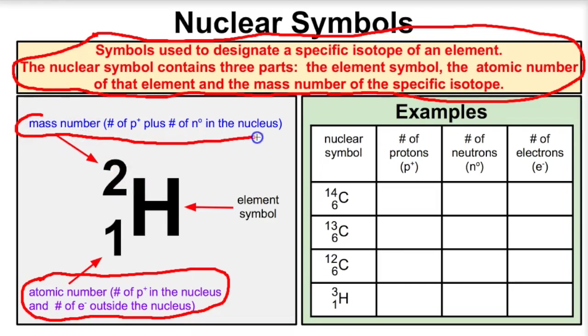And then in the top left-hand corner we're going to have the mass number. The mass number is the number of protons plus the number of neutrons, and that gives you your mass number.